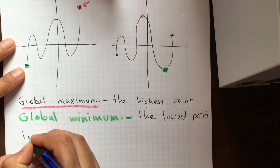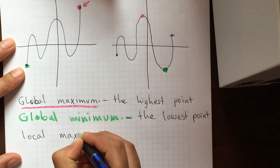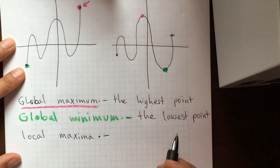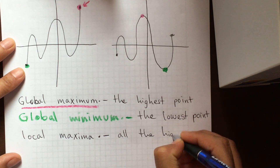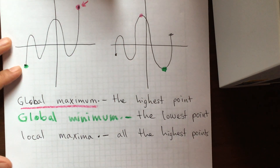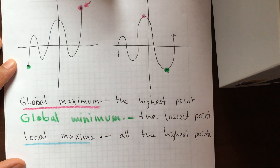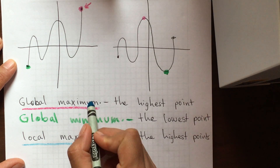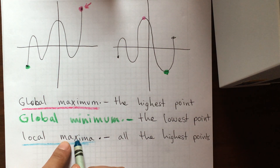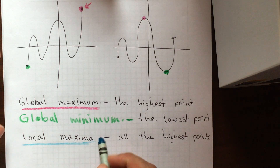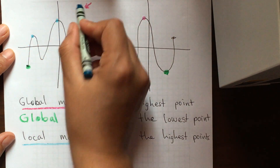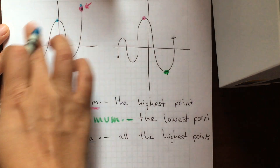We also have the local maxima. The local maxima refers to all the highest points in comparison to other points in the graph. Notice how when talking about one point it's 'maximum', but when there are many or more than two points then it's 'maxima'. In this graph, the local maxima would be these three points, and the global maximum would also be called a local maximum.